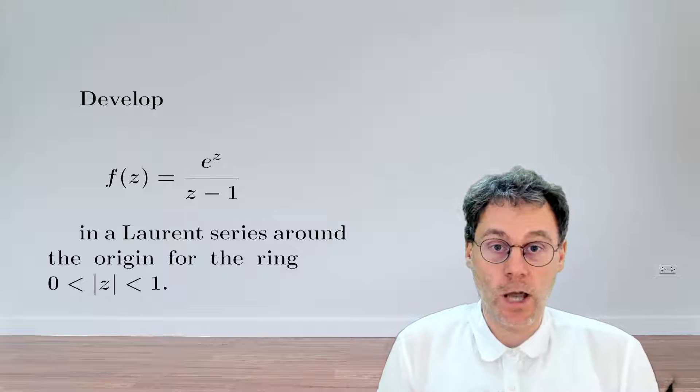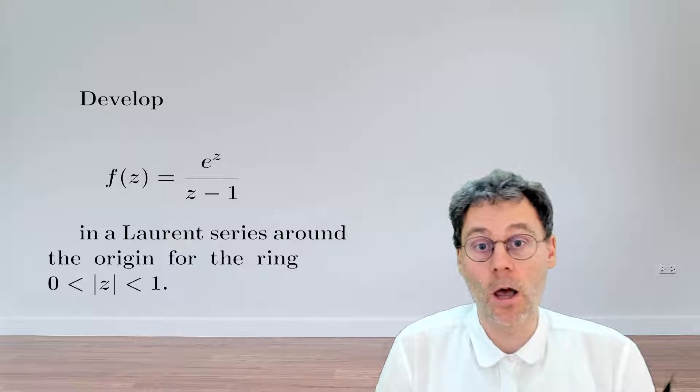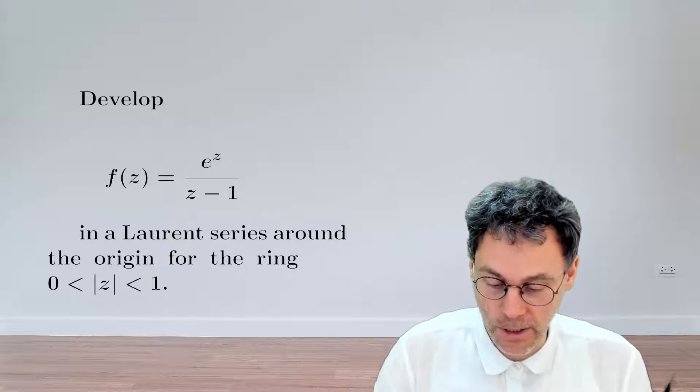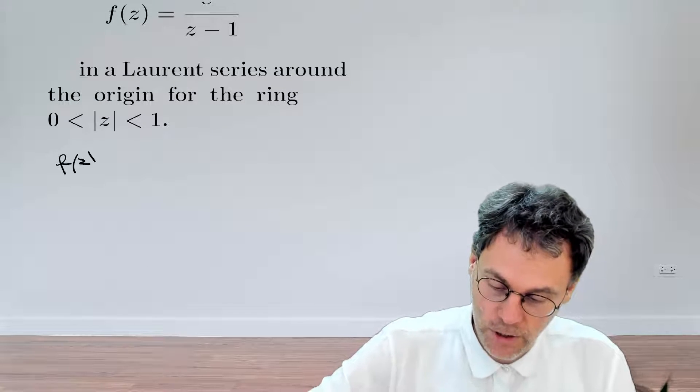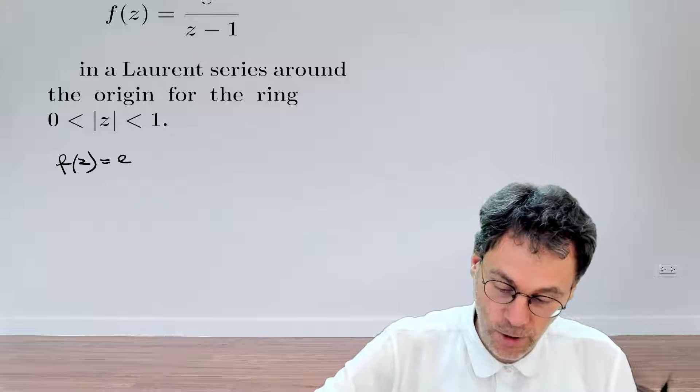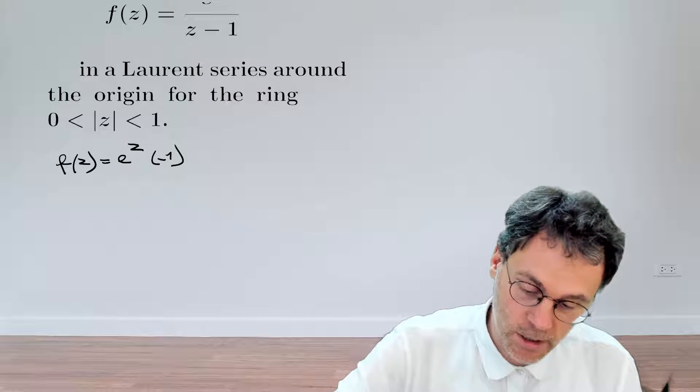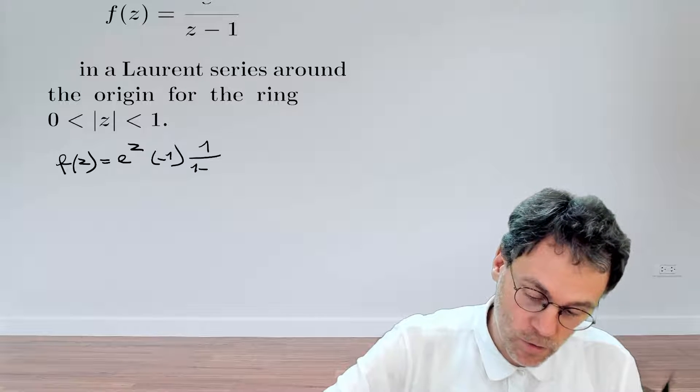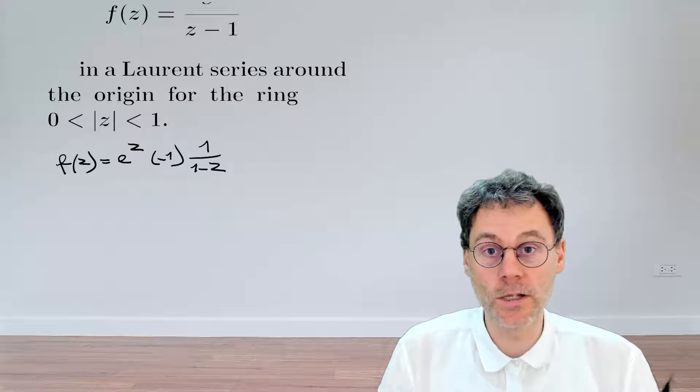Now this function is not so scary as soon as you realize that this is actually the product of two functions of which you already know the series expansion. Let's write down this function more explicitly as an exponential with a known series expansion. And then if we just bring out a minus sign here, this is written as 1 over 1 minus z, of which we also know a series expansion.